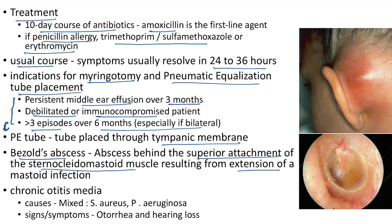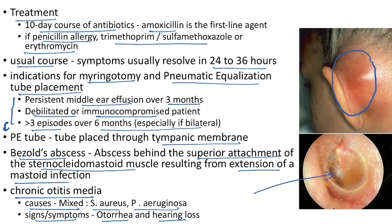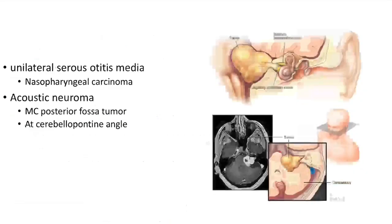Bezold's abscess is an abscess behind the superior attachment of the sternocleidomastoid muscle resulting from extension of mastoid infection. Chronic otitis media is caused by mixed infection of Staphylococcus aureus and Pseudomonas aeruginosa. Signs and symptoms include otorrhea and hearing loss. Unilateral serous otitis media is often associated with nasopharyngeal carcinoma.